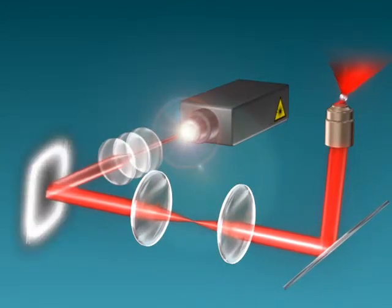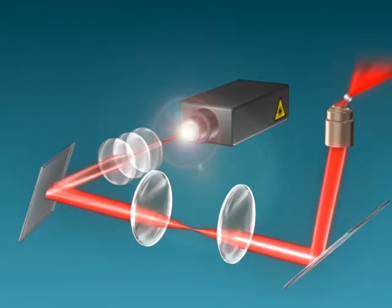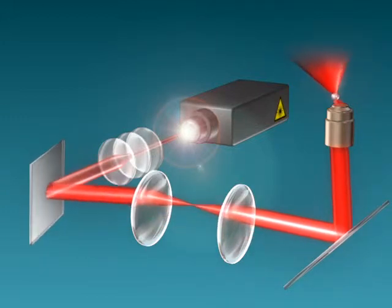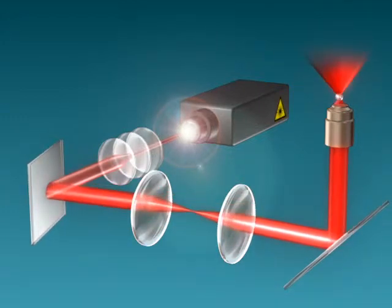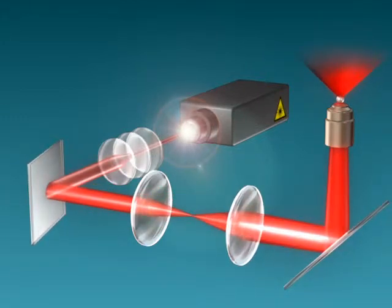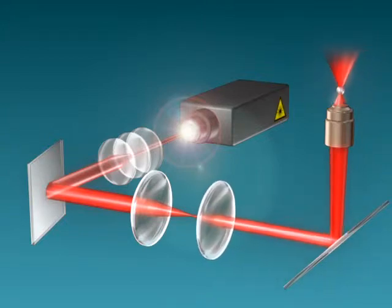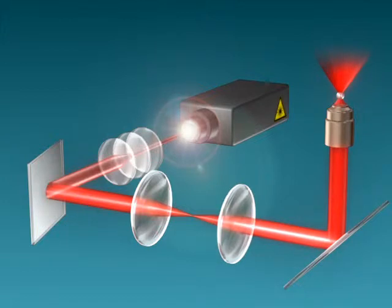By rotating the optical trapping mirror, the optical trap can be steered right and left in the sample plane. By moving the second telescoping lens, the optical trap can be lowered and raised. The trapped object follows the motion of the optical trap.